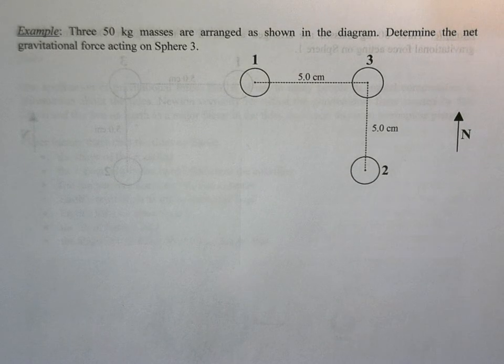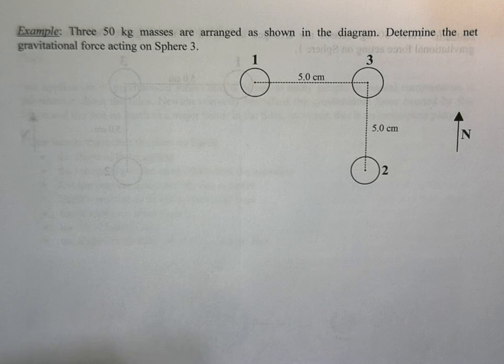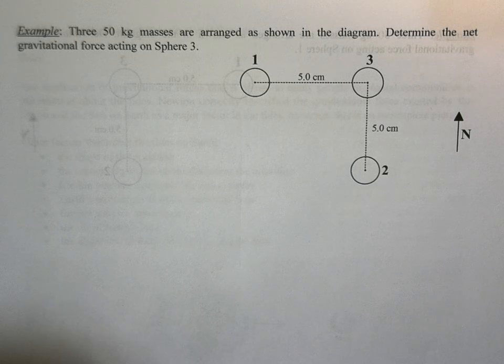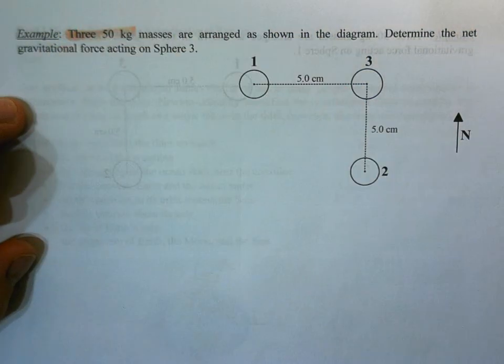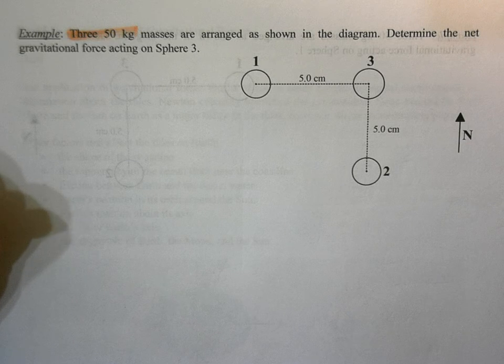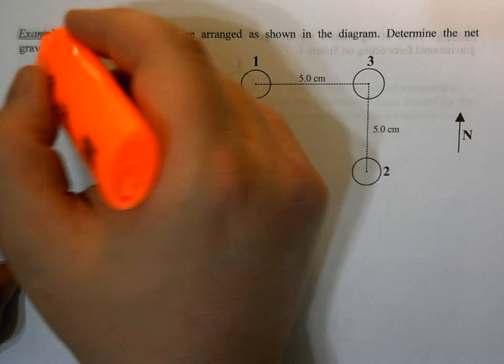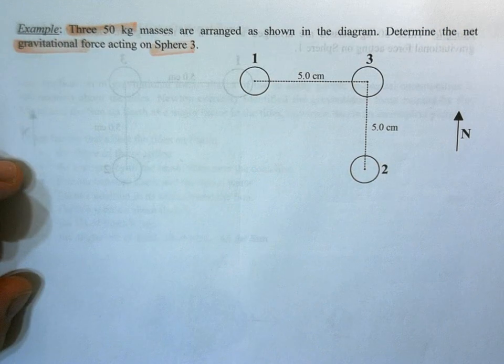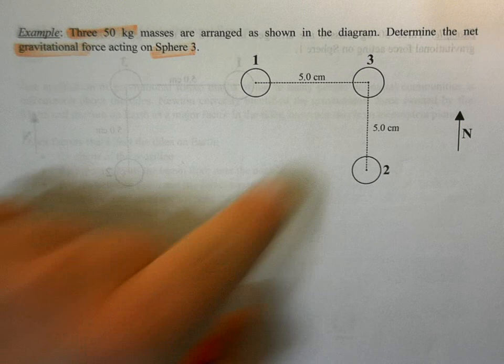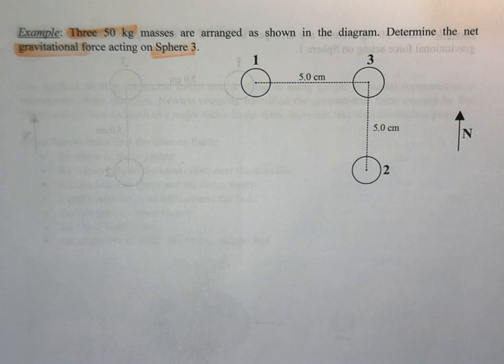As I've mentioned, the methodology doesn't change, just some of the terms that we use. Instead of saying the supplied force, we're going to be looking at force of gravity. So we're going to do two different examples. We're going to start with an easy, more common one that you'll see. So we have these three 50 kilogram masses arranged as shown in this diagram. We want to determine the net gravitational force acting on sphere 3.